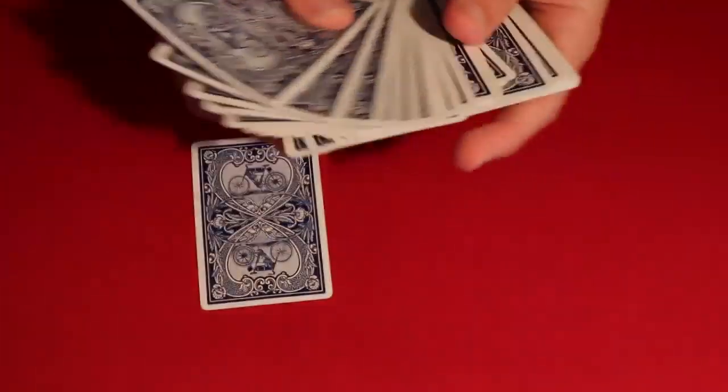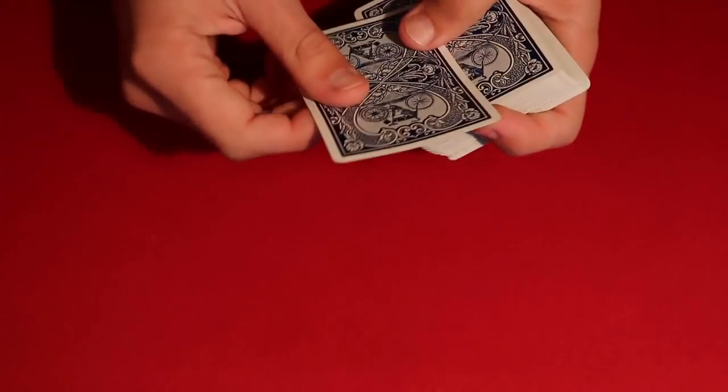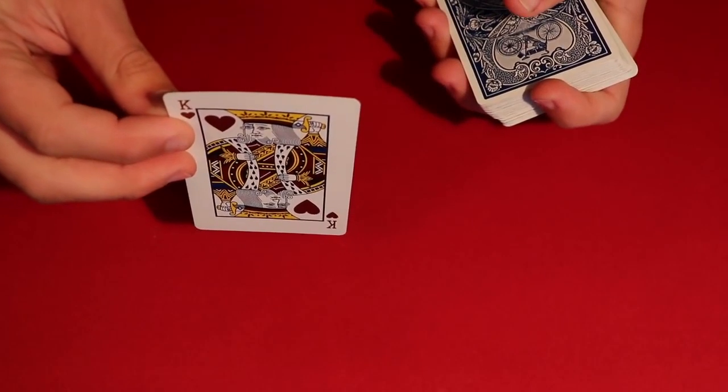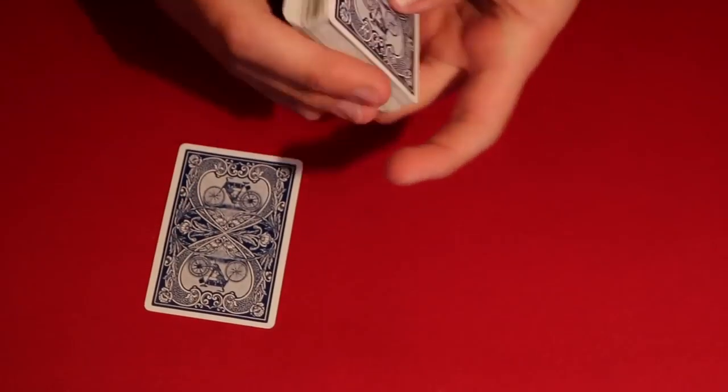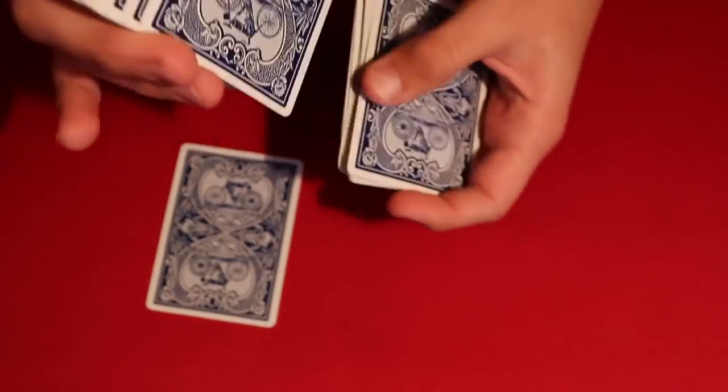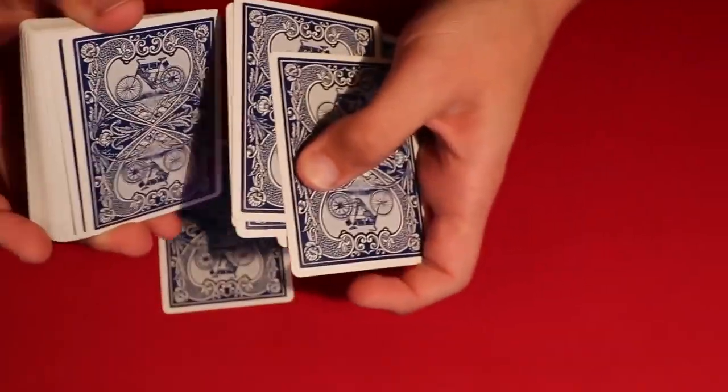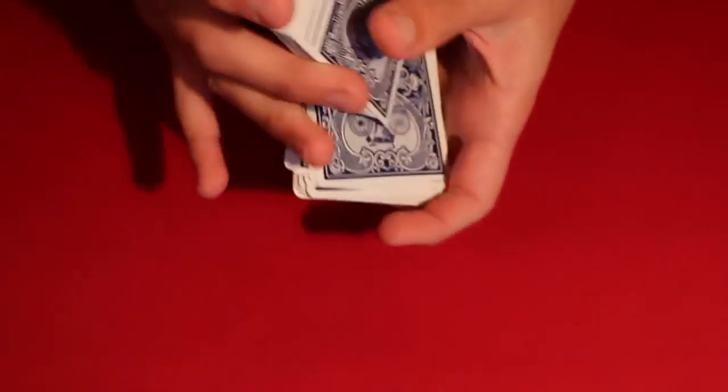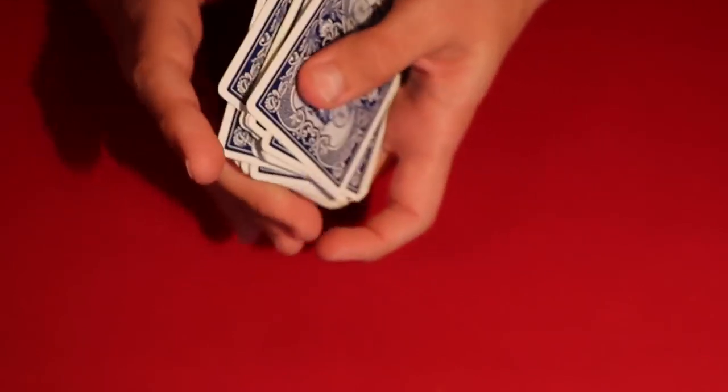You could go ahead and have the spectator pick any card they want to. Let's say in this case this is going to be your card for the trick, and essentially you would just tell me when to stop whenever you want. So let's say you just said stop right around here. You go ahead, you put the spectator's card in the middle of the deck.